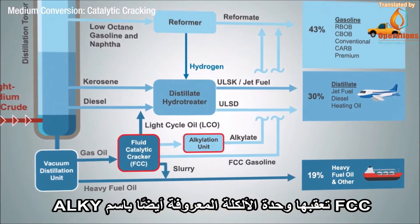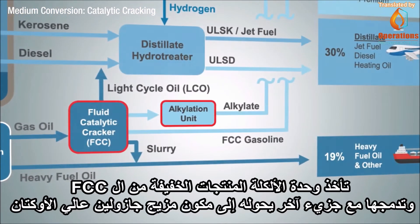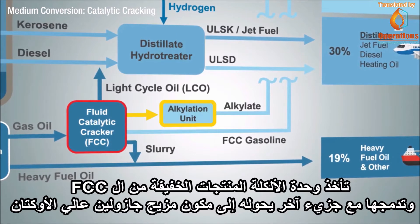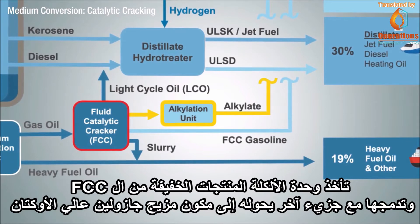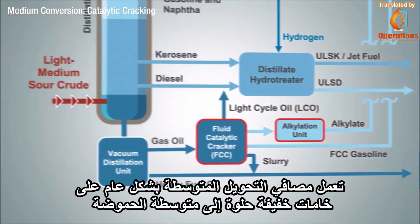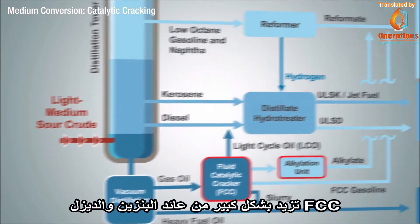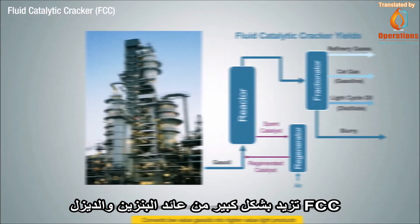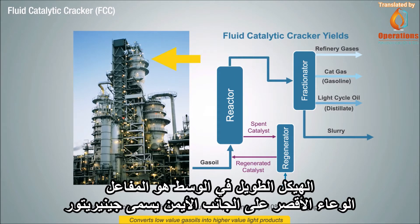Downstream of the FCC is what we call an alkylation unit, also known as the alky. The alky unit takes a light product off the FCC and combines it with another molecule, converting it into a very high-octane gasoline blend component called alkylate. Medium conversion refineries generally run light sweet to medium sour crudes, and having an FCC greatly increases your gasoline and diesel yield. On the left is a picture of an FCC unit — the tall structure in the middle is the reactor, and the shorter vessel on the right-hand side is called a regenerator.